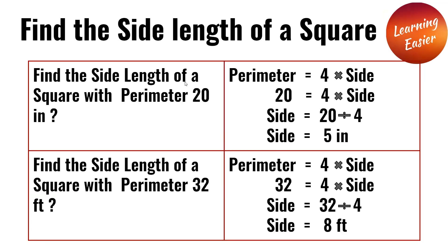Find the side length of a square with perimeter 20 inches. 20 equals 4 multiplied by the side. Side equals 20 divided by 4. Side equals 5 inches.